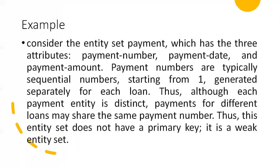Consider the entity set 'payment' which has three attributes: payment number, payment date, and payment amount. Payment numbers are typically sequential, starting from one, and generated separately for each loan. Thus, although each payment entity is distinct, payments for different loans may share the same payment number. Hence, this entity set does not have any primary key, and it is called a weak entity set.